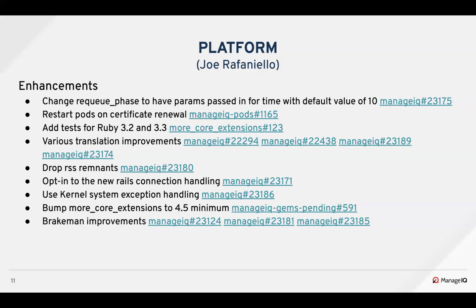Thanks Adam. For platform enhancements, Samuel changed the request task state machine, adding an optional re-queue phase deliver-on value, and it defaults to 10 seconds from now. Brandon enhanced the podified side to restart pods when a certificate is renewed. Jason added Ruby 3.2 and 3.3 testing on more core extensions. For translations, we removed the location of strings in English files as they're no longer needed — the file was over two megabytes before and under one megabyte after — improving readability and consumption by downstream systems. We also updated English and other language translations and added logic to automate generating the UI JSON files.